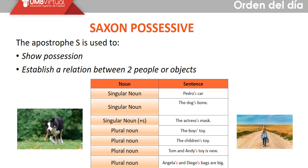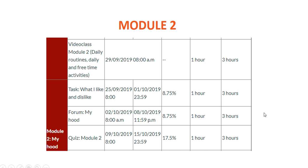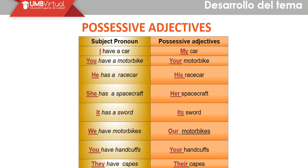So the Saxon possessive has two uses: to show possession or to establish a relation between two people or objects. Now let's look at possessive adjectives. When we use possessive adjectives, we show a degree of closeness or connection with someone or something.